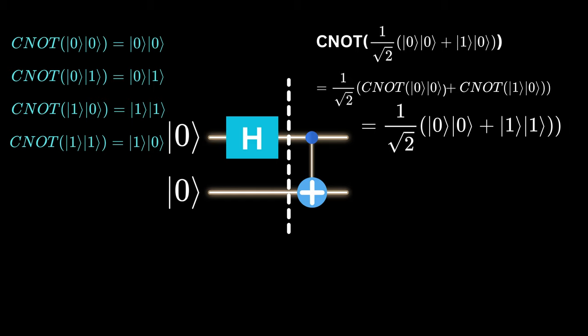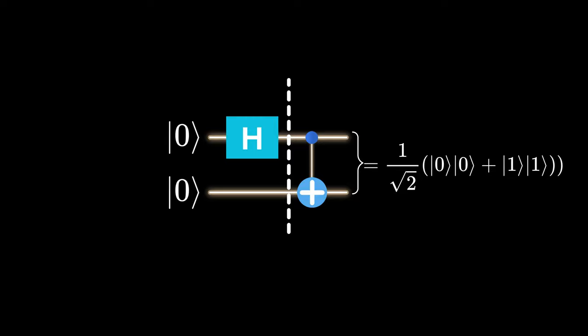But CNOT of 0, 0 is equal to 0, 0. And CNOT of 1, 0 is equal to 1, 1. So the final state is 1 over square root of 2, 0, 0 plus 1, 1. This combination results in a fascinating quantum behavior, entanglement.